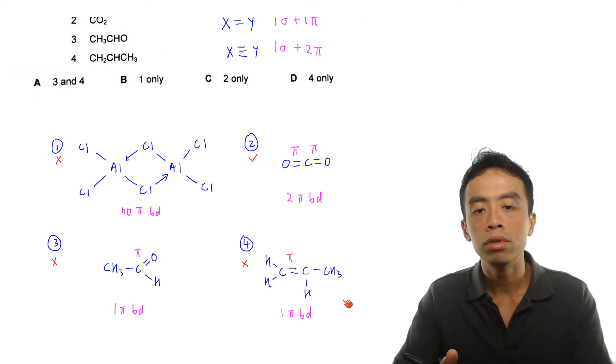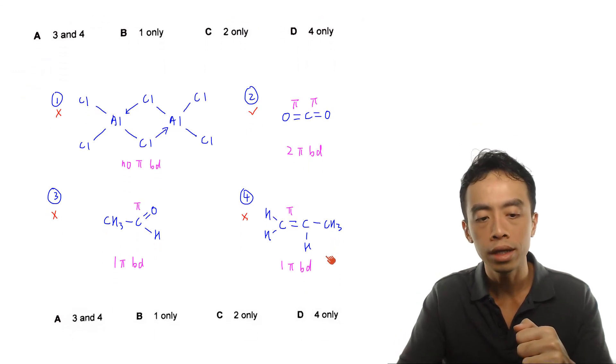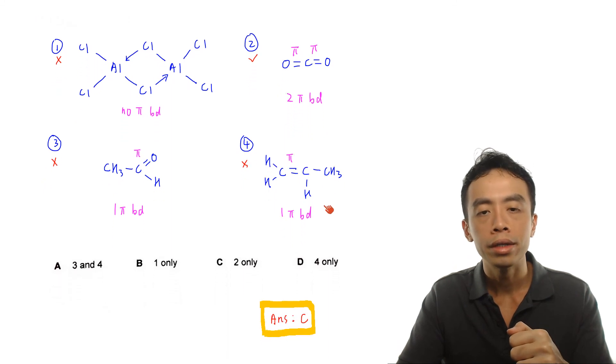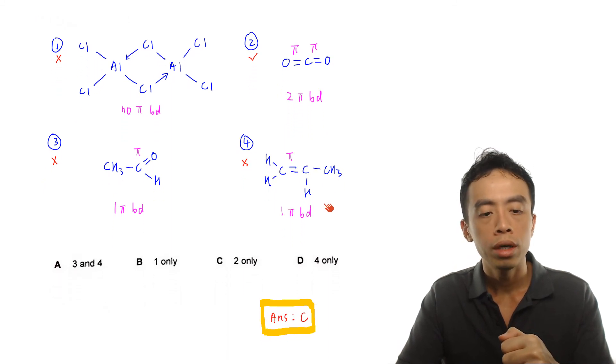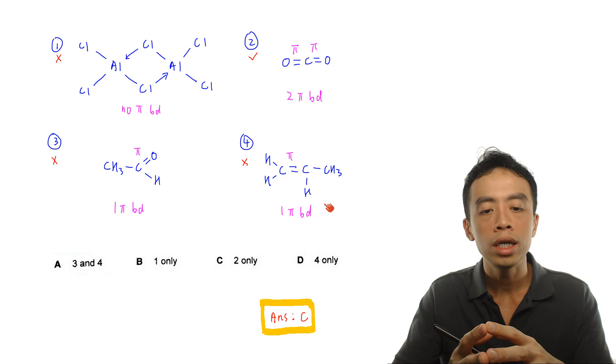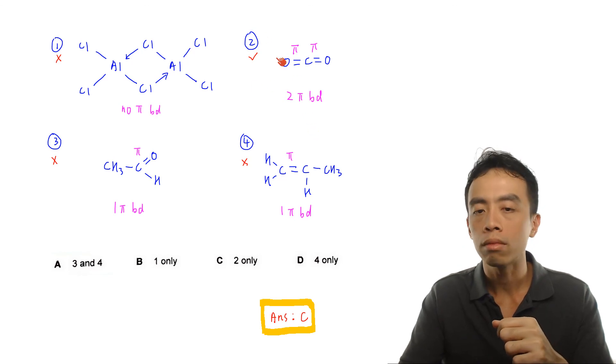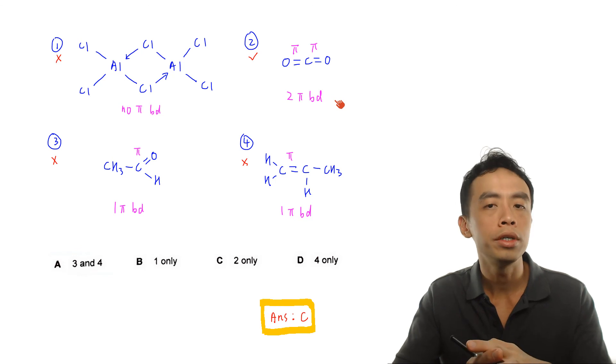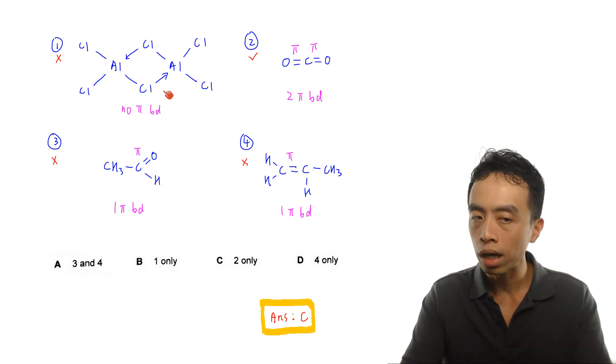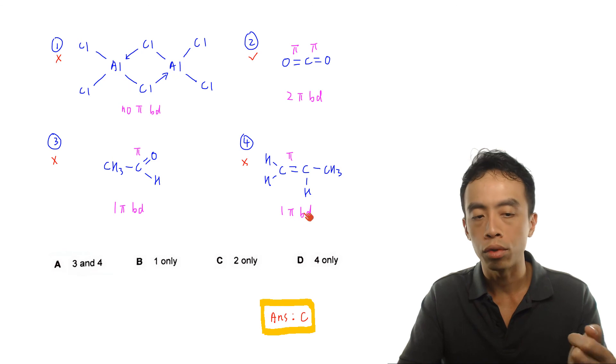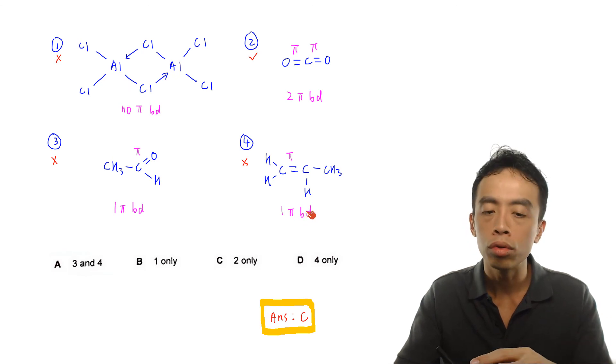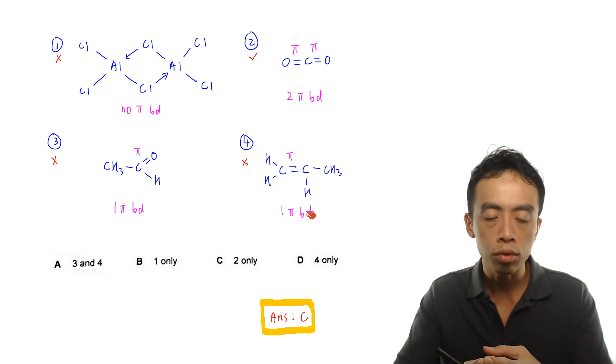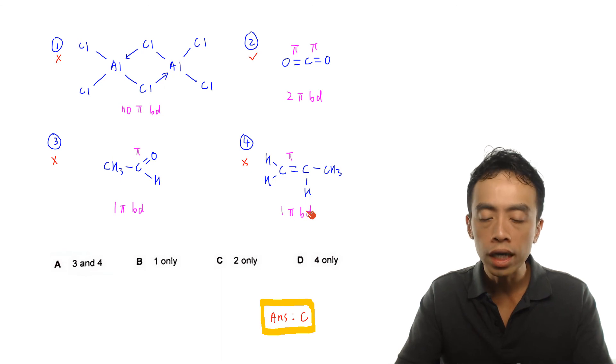So after running through these four very simple examples, we can finally come back to the answer and we can compare the four options. So in this case, only option number two has two pi bonds. The rest of the species do not have two pi bonds. Option one has no pi bond. Options three and four has only one pi bond. So the answer to this question, very obviously, will have to be option C, two only.